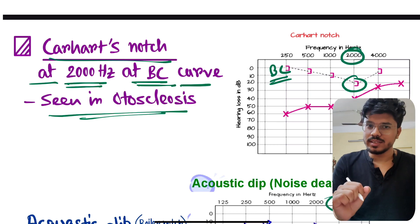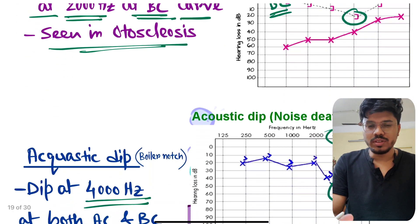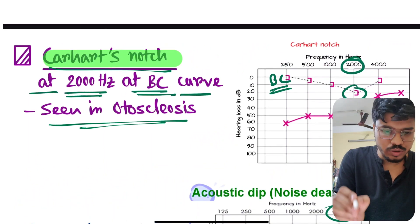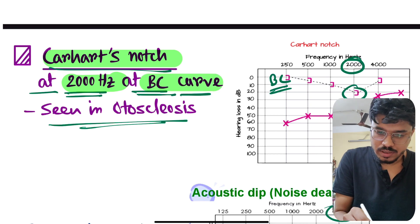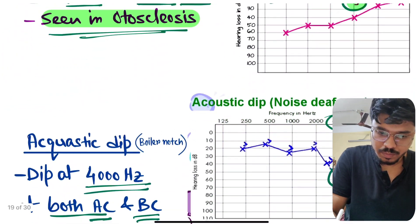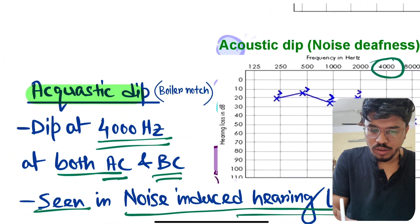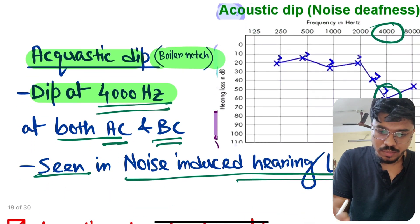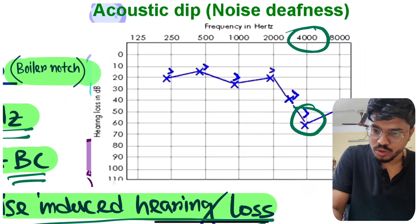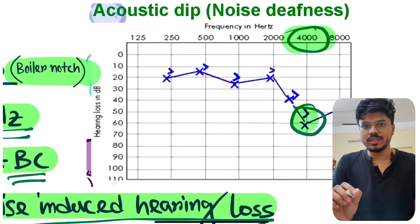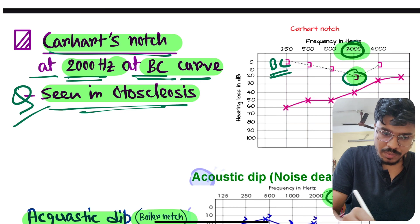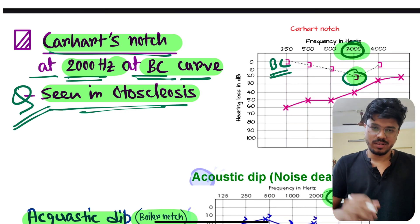To summarize: Carhart's notch is at 2000 Hz on the bone conduction curve, seen in otosclerosis. The acoustic notch, also called boiler's notch, is a dip at 4000 Hz in both AC and BC, seen in noise-induced hearing loss. Revise this carefully — Carhart's notch is a frequently asked exam question. See you in the next video!